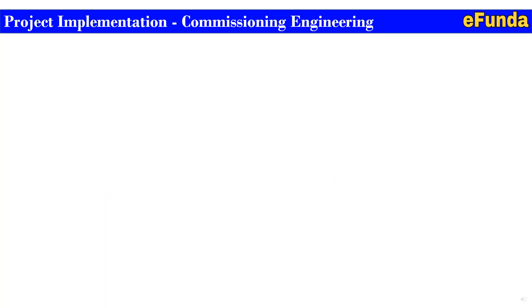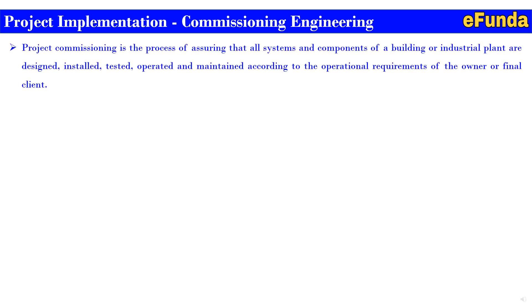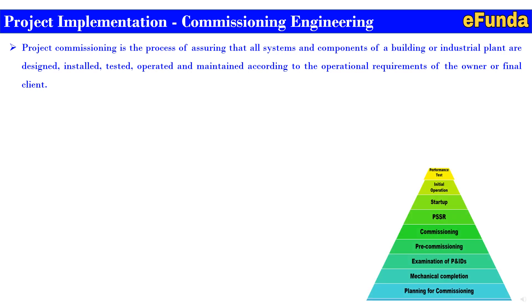Introduction to project implementation commissioning engineering: project commissioning is a process of assuring that all the systems and components of a building or industrial plant are designed, installed, tested, operated, and maintained according to the operational requirement of the owner or the final client. One can refer to the triangle where the planning for commissioning covers mechanical completion, examination of P&IDs, pre-commissioning, commissioning, PSSR, and startup.